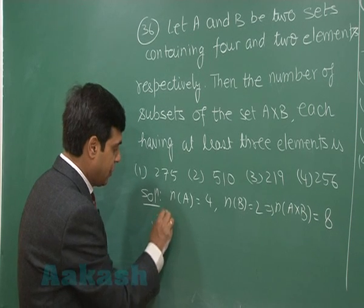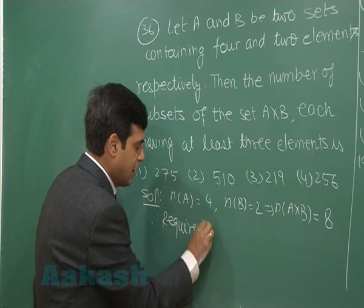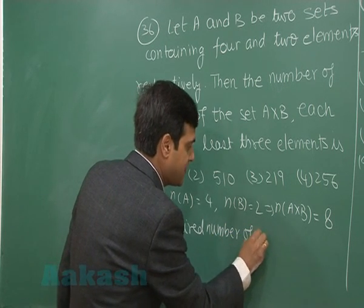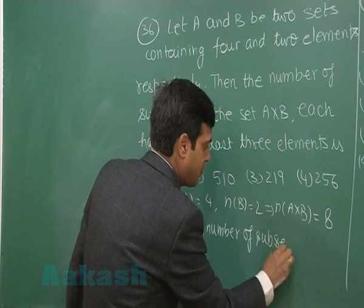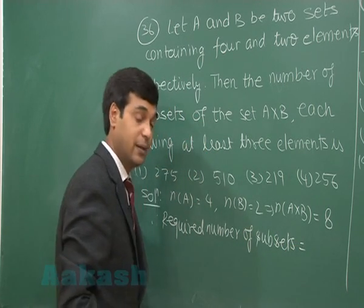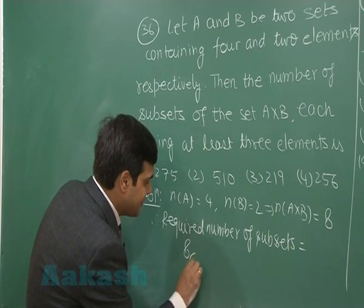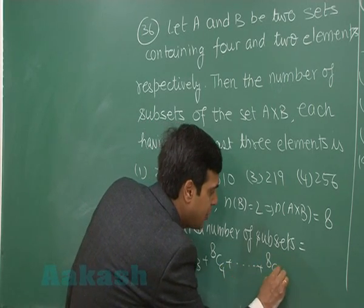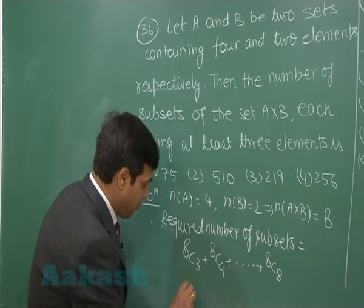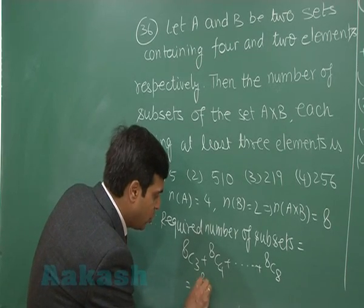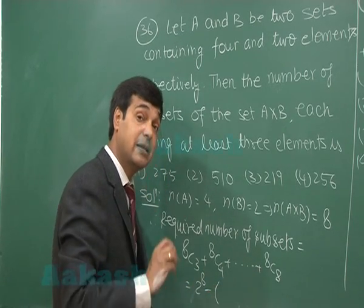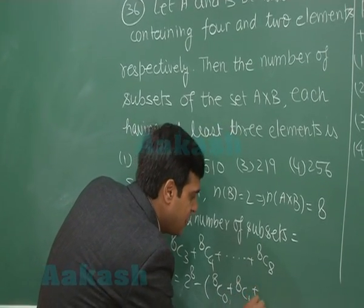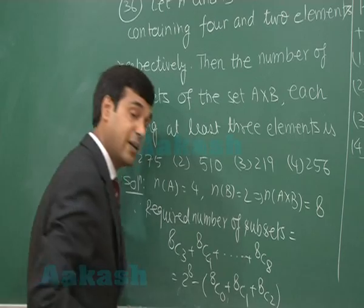Therefore, the required number of subsets equals 8C3 plus 8C4 plus and so on till 8C8, which is equal to 2 to the power 8 minus the remaining terms: 8C0, 8C1, 8C2.